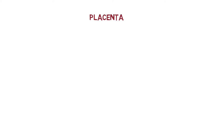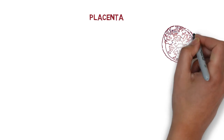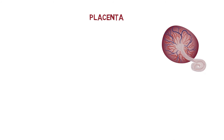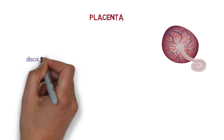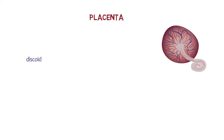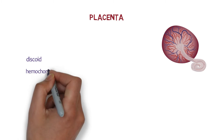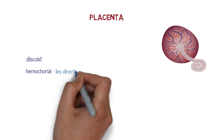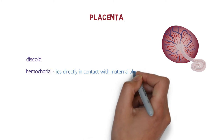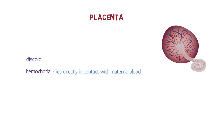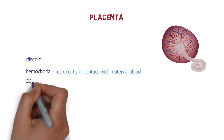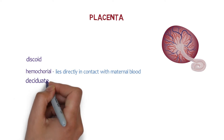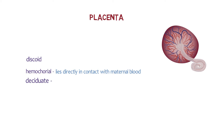The human placenta is discoid because of its shape, hemochorial because of direct contact of the chorion with maternal blood, and deciduate because some maternal tissue is shed at parturition.